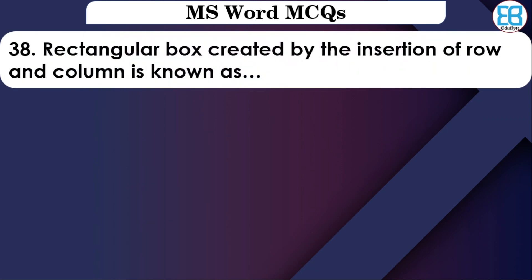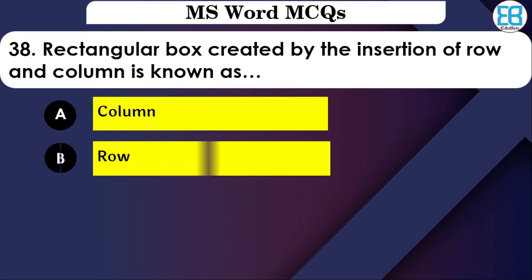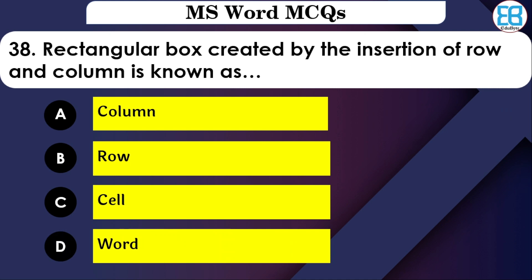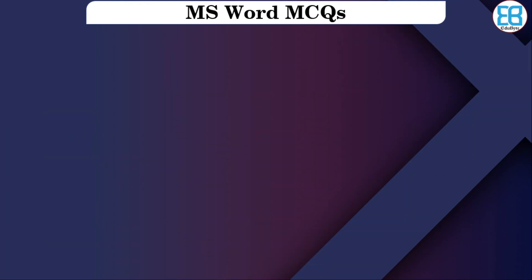A rectangular box created by the intersection of a row and a column is known as what? The options are: Column, Row, Cell, or Word. The correct option is Cell — the intersection of a row and column forms a Cell.